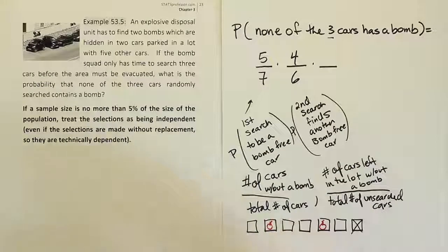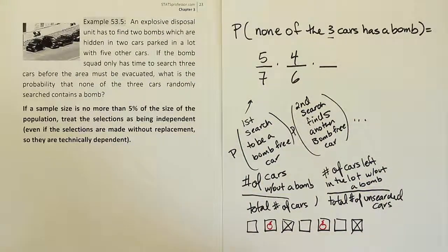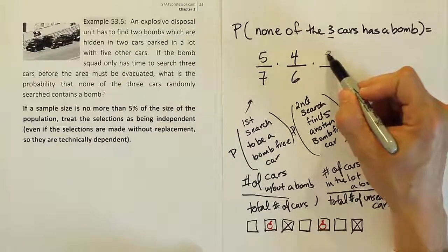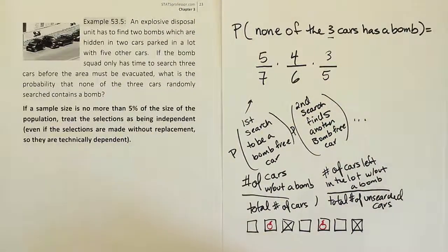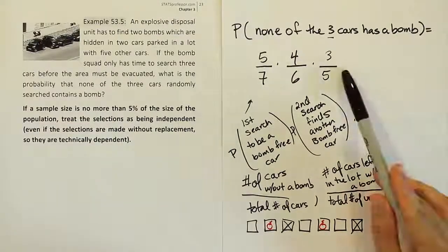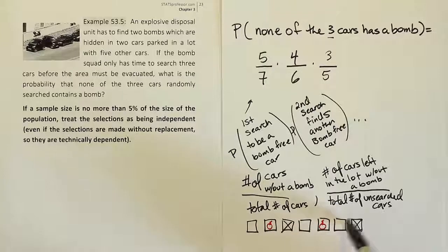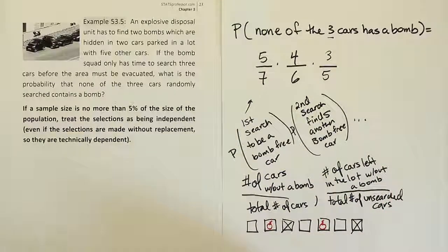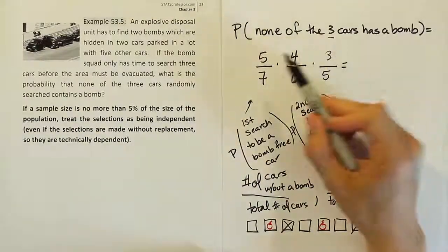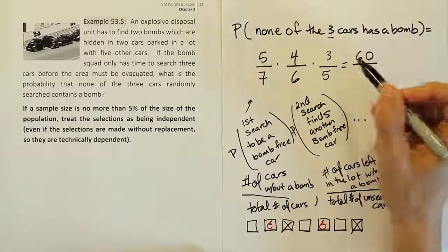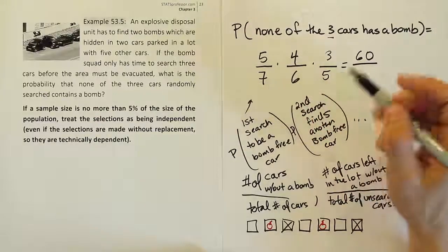After the second search, we go on to the third fraction. The pattern is simply reduce both numerator and denominator by one each time. For the third fraction: how many cars are left without a bomb? We've searched two bomb-free cars already, so one, two, three remain without a bomb. Total unsearched cars at that point: five. So the third fraction is three-fifths. Then we just multiply it out: five times four is 20, times three gives 60; seven times six is 42, times five is 210. That gives us sixty over two-ten.